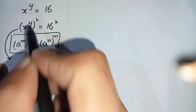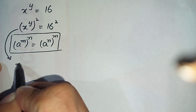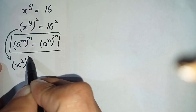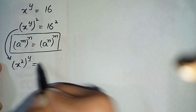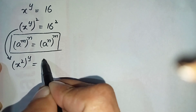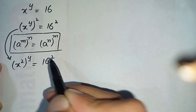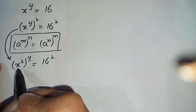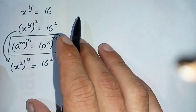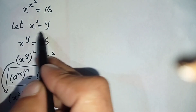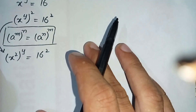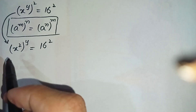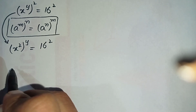By using this exponential property, we will replace the powers with each other, so it will become x² whole power y is equal to 16². As we previously considered that x² is equal to y, we will replace x² with y again.